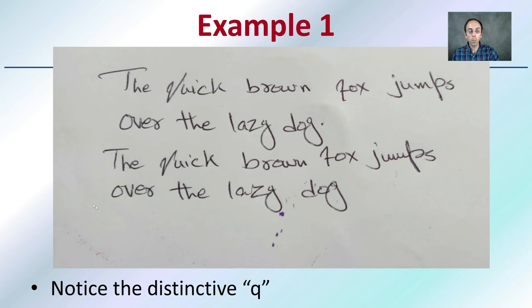Now, in example one, if we look at this, we notice the distinctive Qs. We can see that the Q definitely has something a little bit more unique to it as potentially some other letters like the Gs. But this is just one example of something that we can look at and compare.